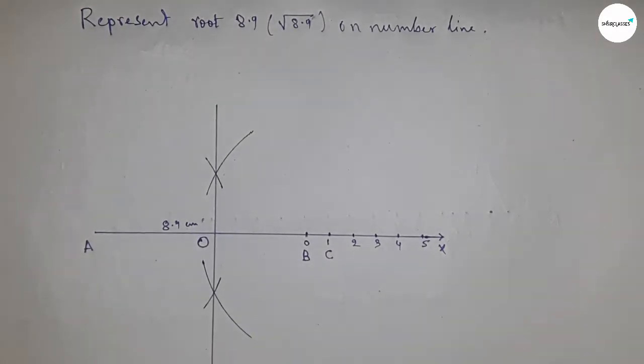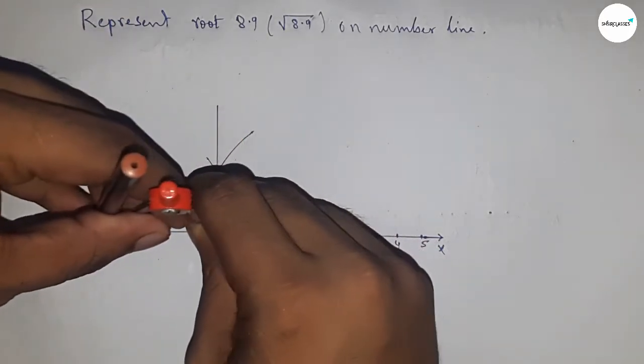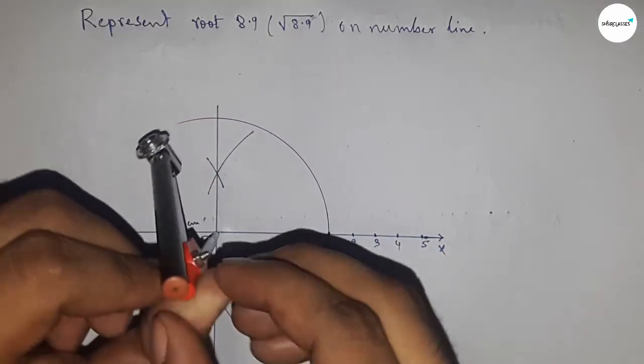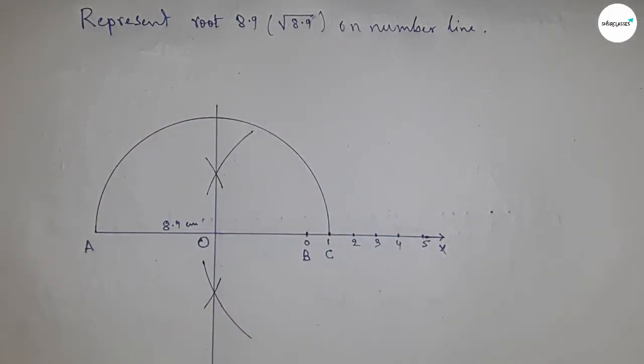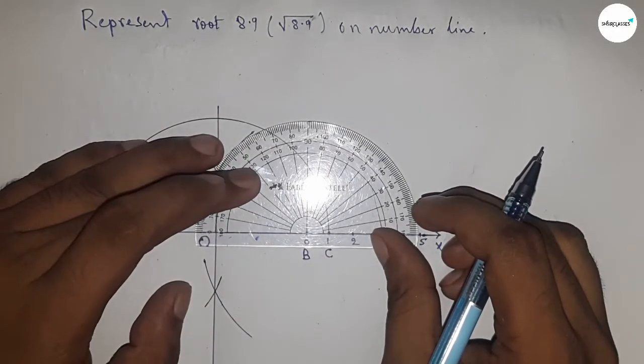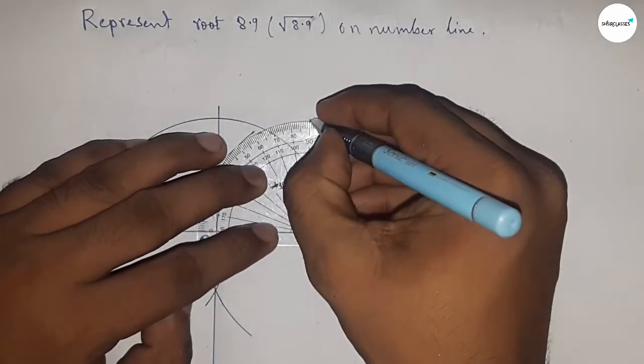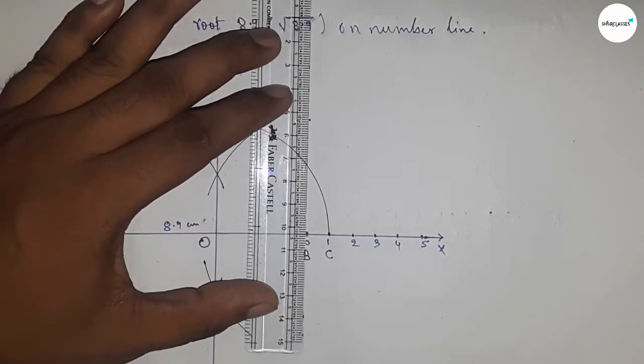Now taking the length OA and OC to draw a semicircle. Now drawing a 90-degree angle on the point B by using a protractor, so drawing a 90-degree angle here.